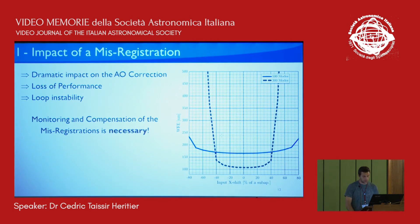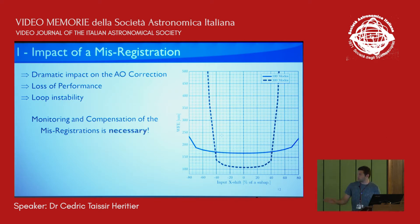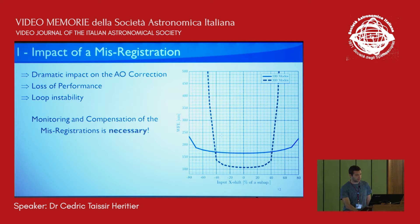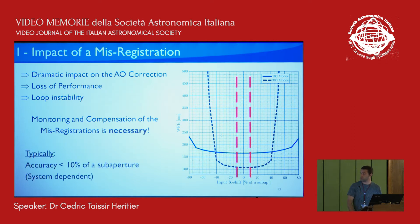This misregistration has quite a bad impact on AO performance. On the right, I show the wavefront error of a simple AO system as a function of shift. The optimal working point is centered, and when the system starts shifting, you get a loss of performance and then the loop can become unstable. So there's a need to monitor and compensate for this misregistration. Typically we want to remain under 10% of a sub-aperture shift, though this is system dependent.